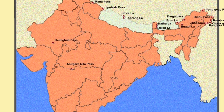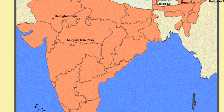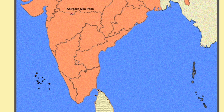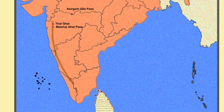Then we come to the southern part of India. There are many passes along the Western Ghats. The important passes are: first, Thal Ghat, which is located on the busy Mumbai-Nasik route. Second, Malshej Ghat, which is a mountain pass in the Thane-Pune district of Maharashtra.